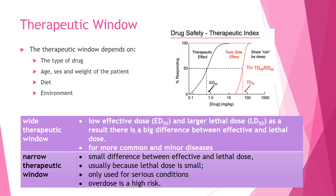If we have a wide therapeutic window — a low effective dose and a large lethal dose — there's a big difference between them. These are generally seen in over-the-counter medications, where it's safe for the patient to administer them without monitoring. On the other hand, if you have a very small therapeutic window — where the effective dose and the toxic dose are very close together — you end up with something quite risky to administer.